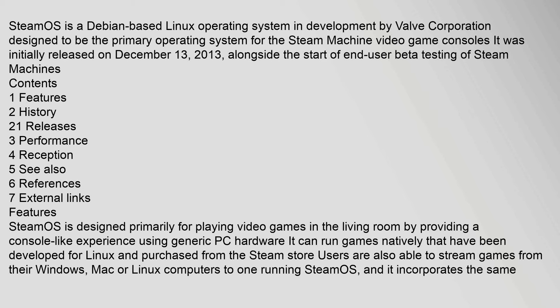SteamOS is a Debian-based Linux operating system in development by Valve Corporation, designed to be the primary operating system for the Steam Machine video game consoles. It was initially released on December 13, 2013, alongside the start of end-user beta testing of Steam Machines.